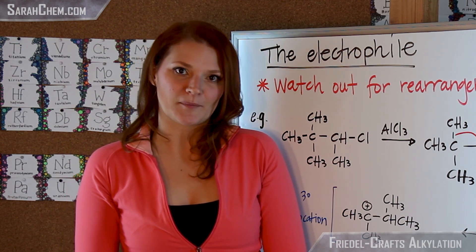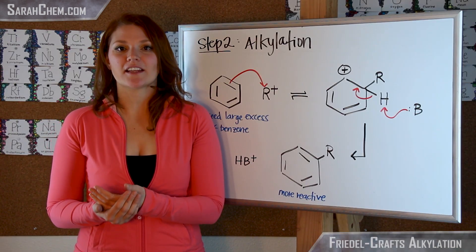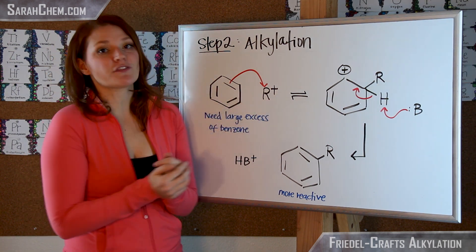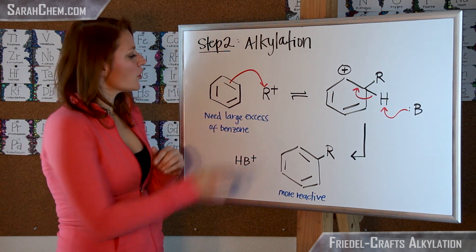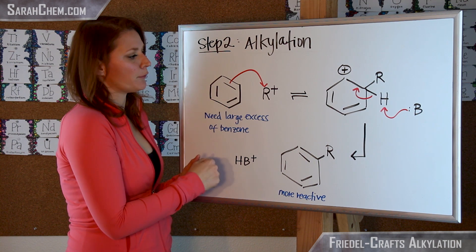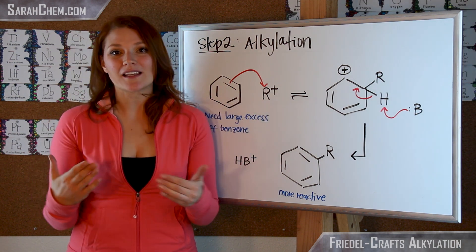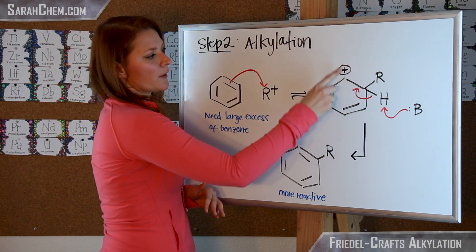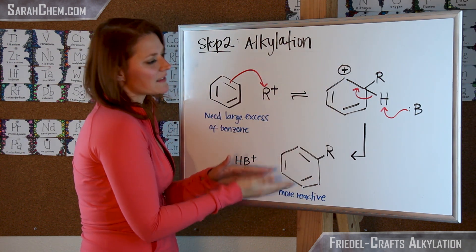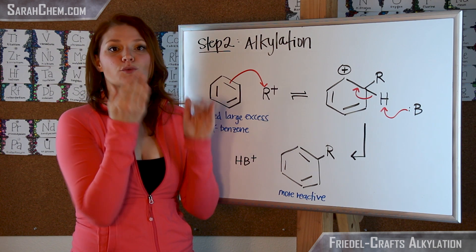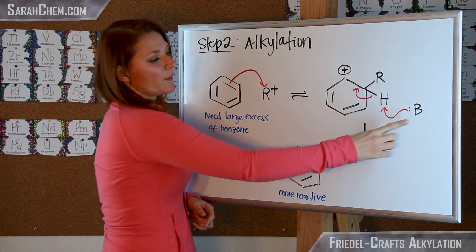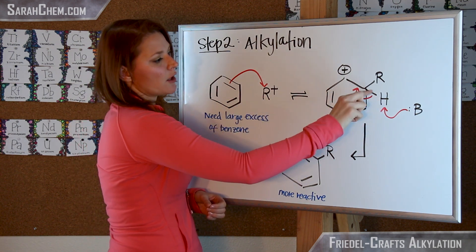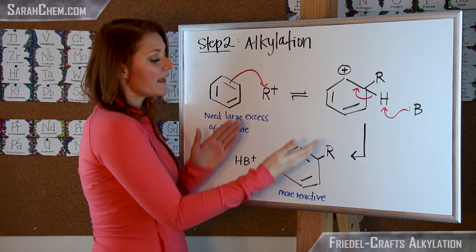Now let's look at the alkylation step. We have our aromatic compound — benzene — and the electrophilic carbocation from the previous step. The pi electrons attack that carbocation. This step is an equilibrium because we are breaking the aromaticity of the benzene, which is unfavorable. After the R group adds to the ring, we have a carbocation intermediate, and the driving force for the next step is to re-establish aromaticity. A base removes a proton from the ring; those electrons collapse down, re-establishing aromaticity, and we get our final alkylated product.